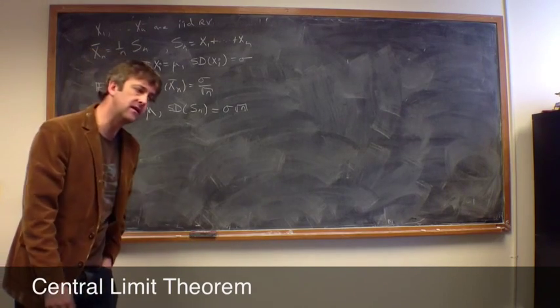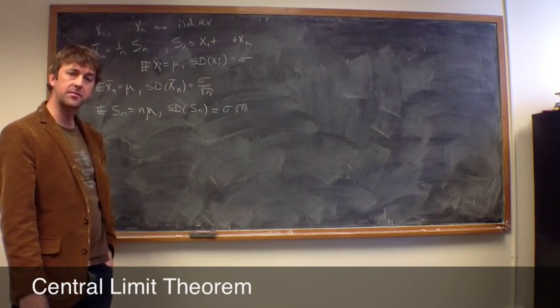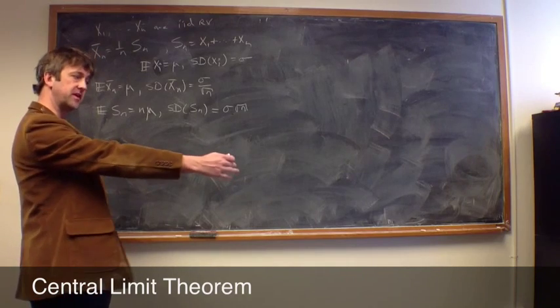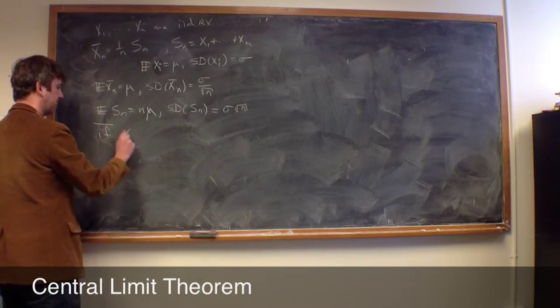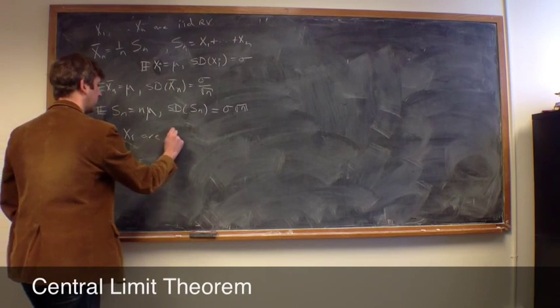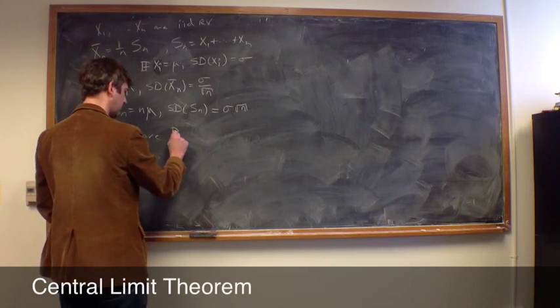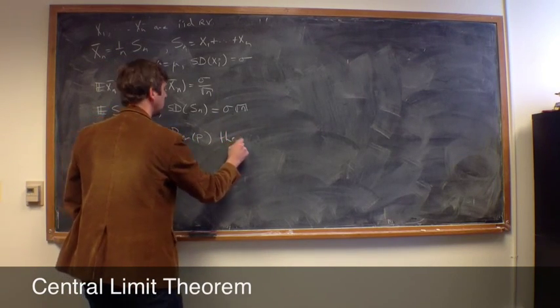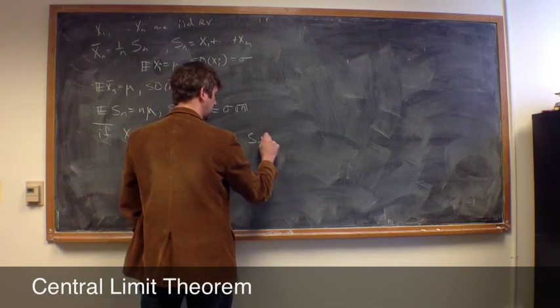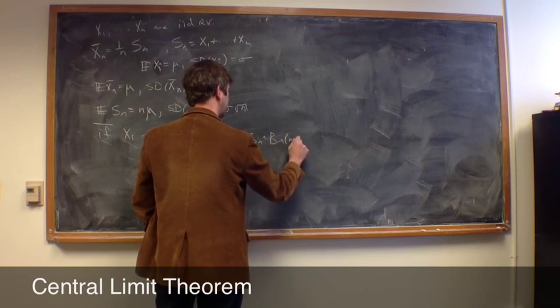Now, we've already seen that for independent Bernoullis, if we add up a bunch of independent Bernoullis, right, so if xi are Bernoulli, Bernoulli p, then sn is binomial n p.